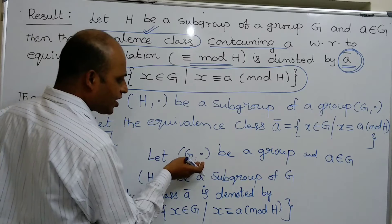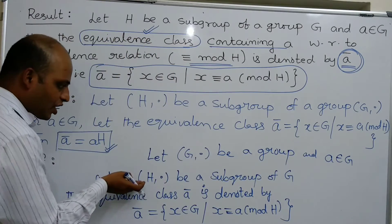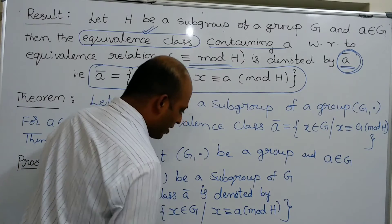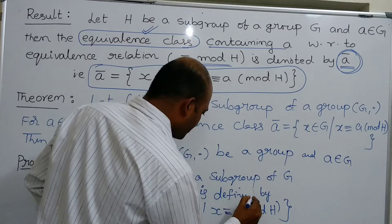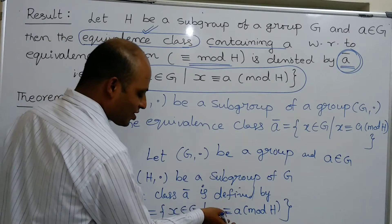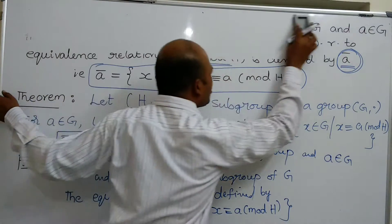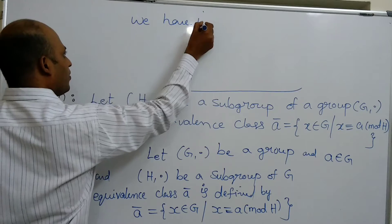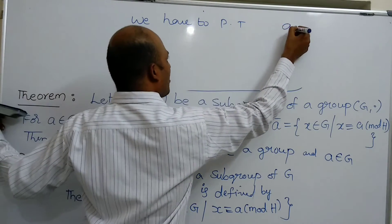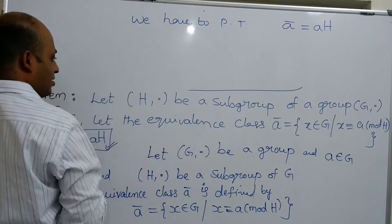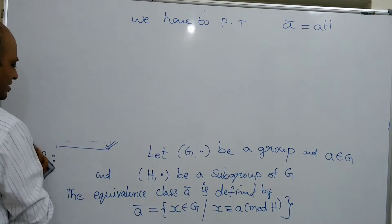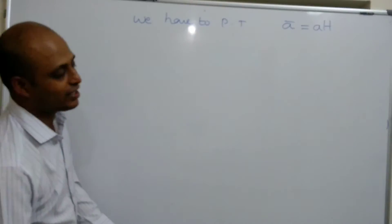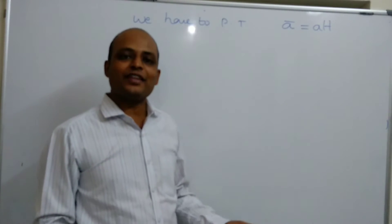Let us prove this theorem. Let (G, ·) be a group, a an element of G, and (H, ·) a subgroup of G. The equivalence class a bar is defined by a bar equals {x ∈ G : x is congruent to a mod H}. We have to prove that a bar equals aH.